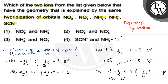So in the first option there is SP2 and SP3 hybridization, so that option is incorrect. In the second option, both have SP2 hybridization, so that option is correct. The third option has SP3 and SP2 hybridization, so it is also incorrect. The fourth option has SCN⁻ as SP and NH₂⁻ as SP3, so it is also incorrect. The same hybridization is shared by NO₂⁻ and NO₃⁻. The correct answer is option number 2. Hope you understood it well, best of luck.